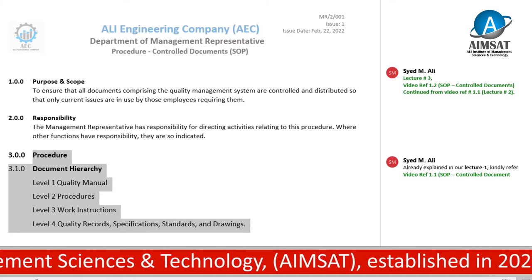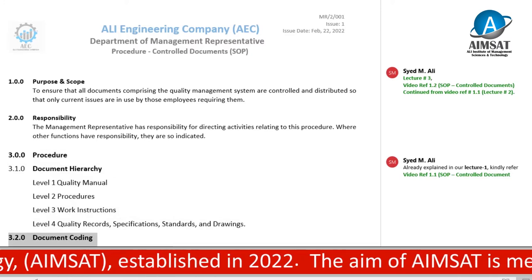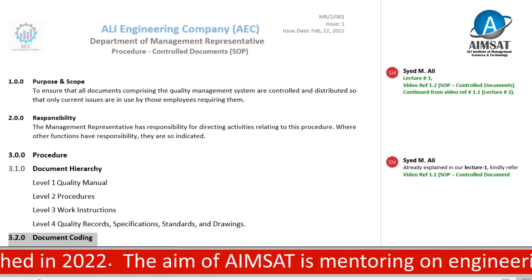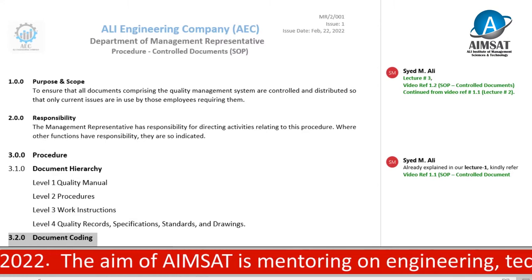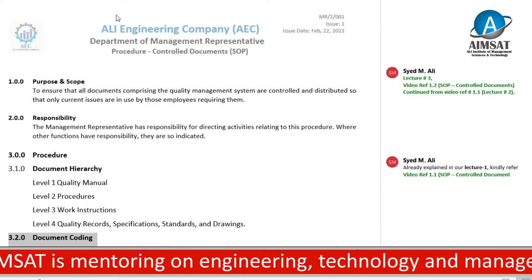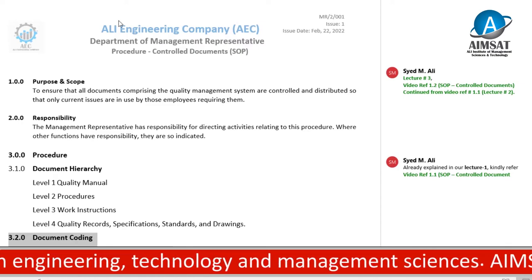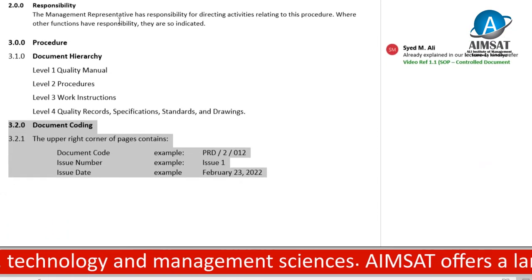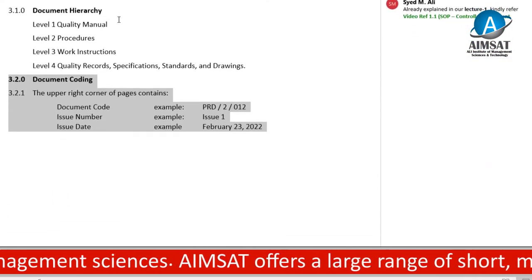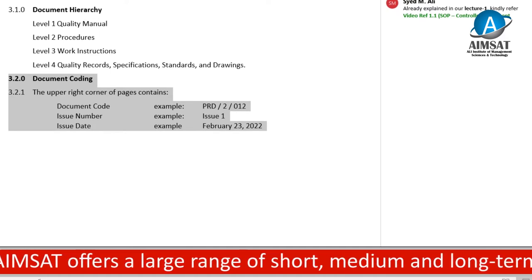Document coding: the upper right corner of the page contains a code such as PRD-2-001, where PRD stands for production — this is the abbreviation of production in three letters. The number 2 is the level of the document as described under document hierarchy, and 001 is the serial number.